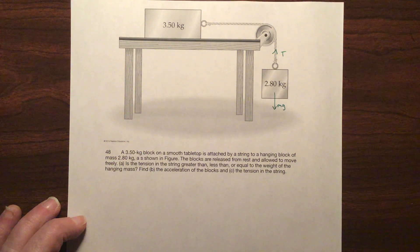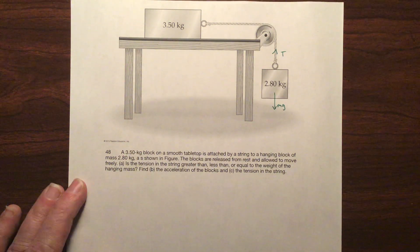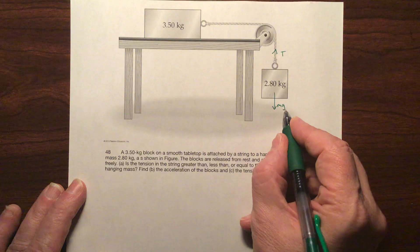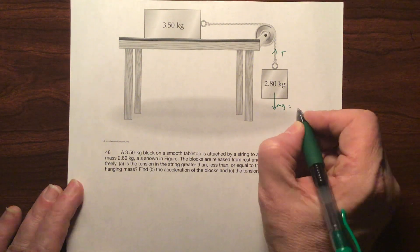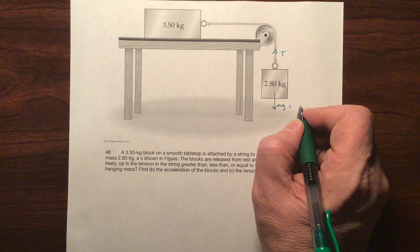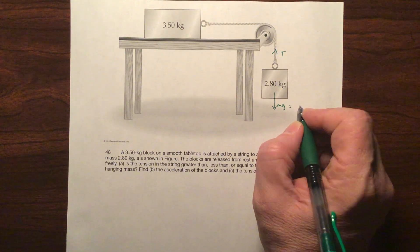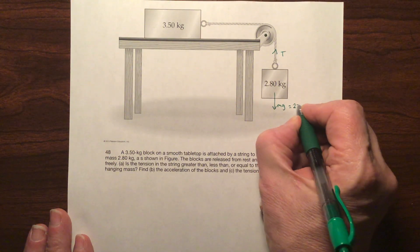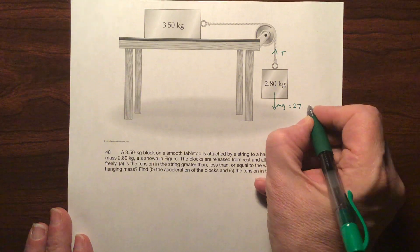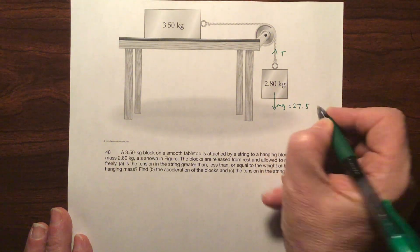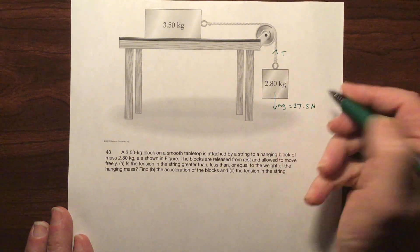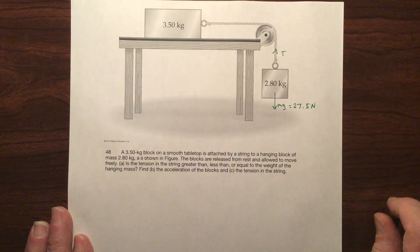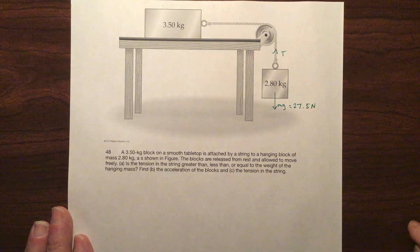So let's do some math. You've got 2.8 times 9.81, there's gravity, equals 27.468. Let's round it. So this is 27.5 Newtons. I don't know the tension yet. I think that's the third thing we're going to do.